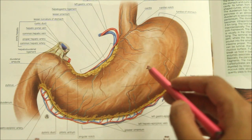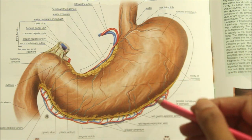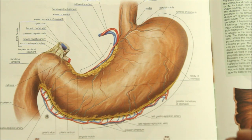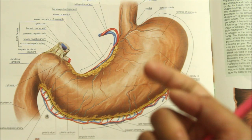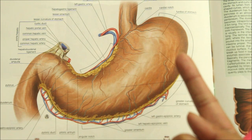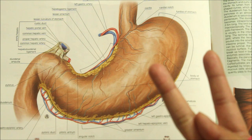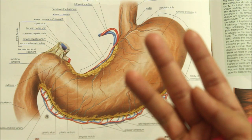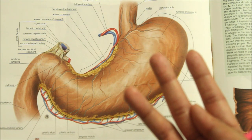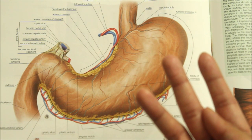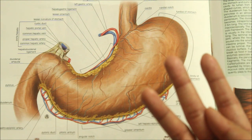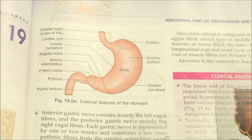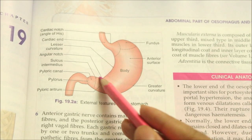The gastric glands distributed in the fundus and the body of the stomach contain all three types of secretory cells: the mucus cells, the chief cells which secrete digestive enzymes, and the parietal cells or oxyntic cells which secrete hydrochloric acid.